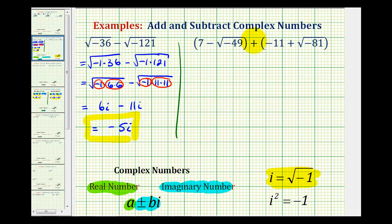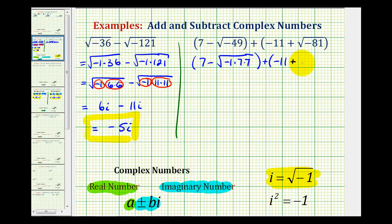Next, to find this sum, we first want to simplify the square root of negative 49 and the square root of negative 81. We can write this as 7 minus the square root of — because the radicand is negative, we'll have a factor of negative 1. 49 is a perfect square because it's equal to 7 times 7. And for the square root of negative 81, because it's negative, we have a factor of negative 1. 81 is a perfect square — it's equal to 9 times 9. So in this form, we should be able to simplify these imaginary numbers.